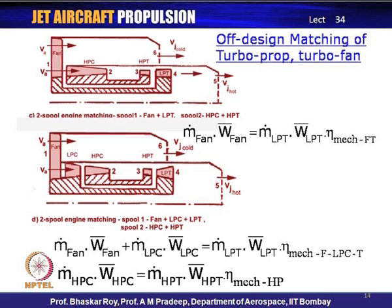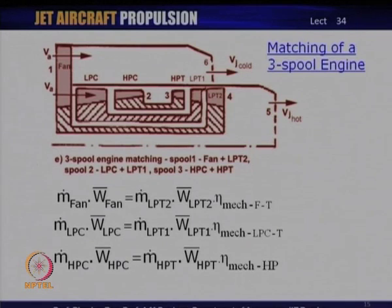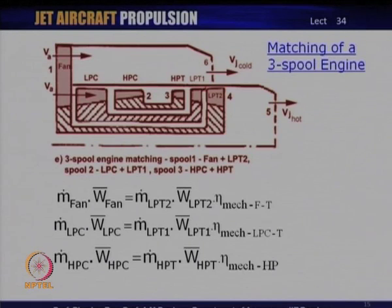For a typical three-spool engine, the problem takes a third level: you have fan mapping, LP compressor mapping, and HP compressor mapping with their respective turbines. All three shafts and three spools need to be matched exactly in terms of work done, mass flow, normalized mass flows, and pressure ratios across these components. We need to find operating points on the fan map, LP compressor map, and HP compressor map exactly matching the corresponding turbine maps of LPT2, LPT1, and HPT. Only after this is done rigorously do we have matched operation of all three spools.